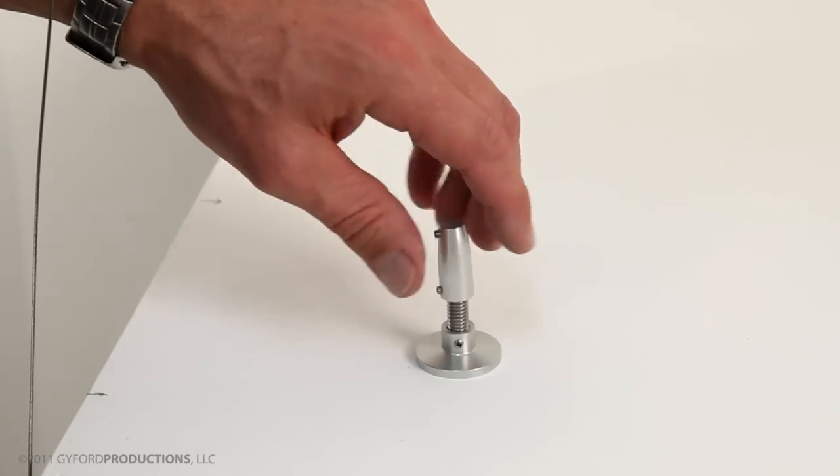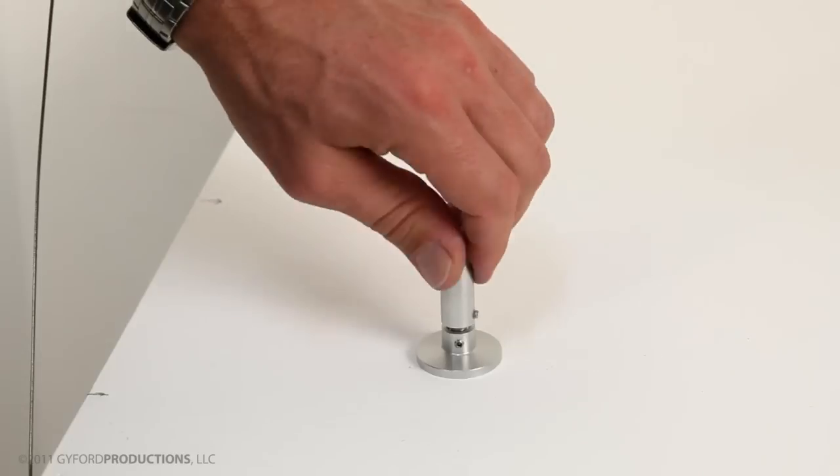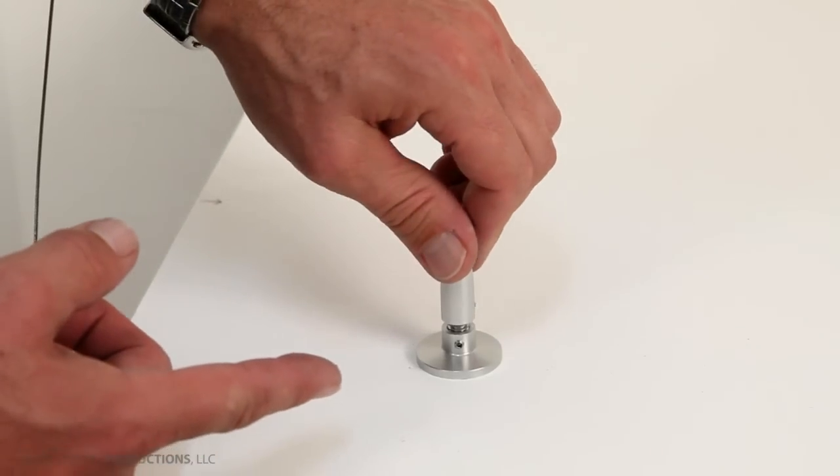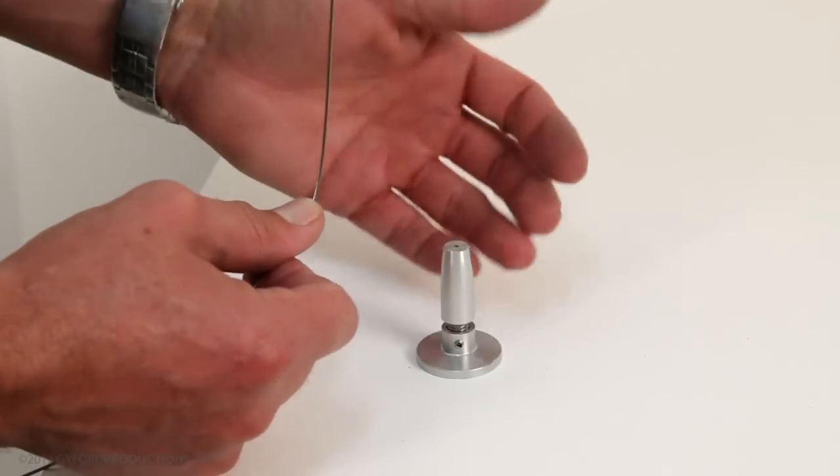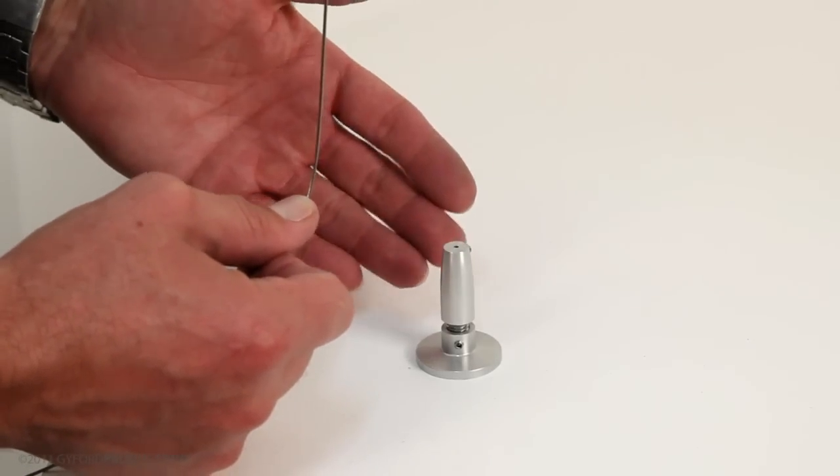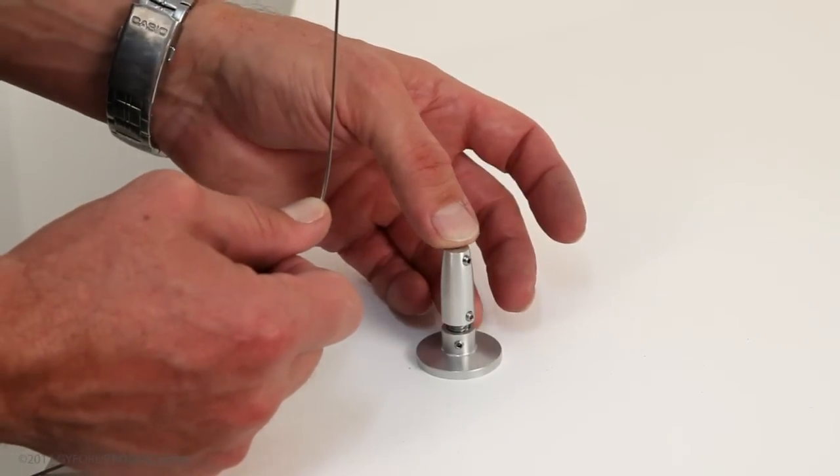We'll thread the turnbuckle body down onto the set screw, and then back it off a few turns. It's important to remember that the concept here is to stretch the wire. The more wire you have, the more gap you're going to need. In this case, with a short wire, about an eighth of an inch should be good enough.